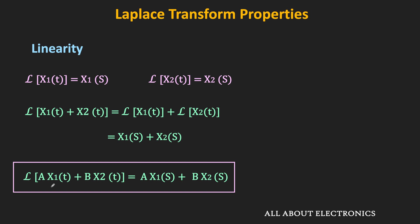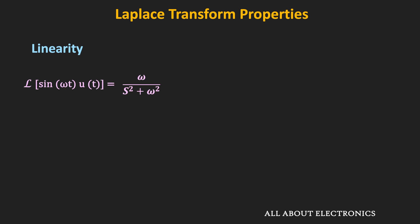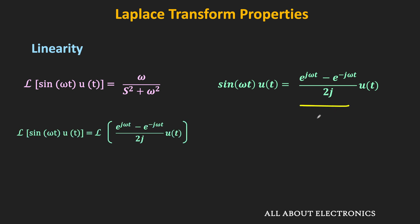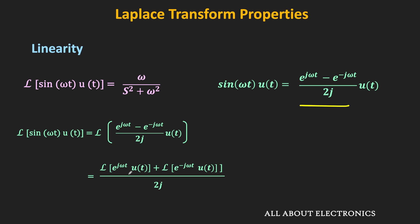As mentioned in the previous video, we used this linearity property when finding the Laplace transform of sin(ωt). As per Euler's identity, sin(ωt) can be expressed as [e^(jωt) minus e^(-jωt)] divided by 2j. The Laplace transform of sin(ωt) is thus equivalent to the Laplace transform of that expression. By linearity, this equals the sum of the individual exponential terms' transforms: the Laplace transform of e^(jωt) is 1/(s - jω), and of e^(-jωt) is 1/(s + jω).